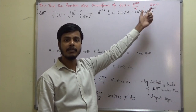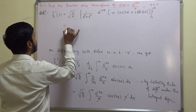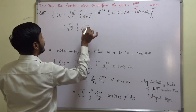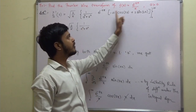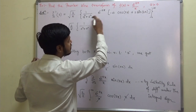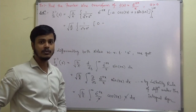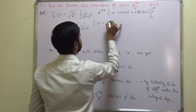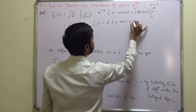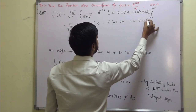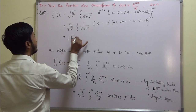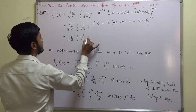Applying the upper limit minus lower limit: at the upper limit, e^(-infinity) = 0, so the upper limit contributes 0. At the lower limit, e^0 = 1, giving minus a·cos(0) plus s·sin(0), which is minus a. So f_s bar dash of s equals sqrt(2/pi) times 1/(s² + a²) times a, that is sqrt(2/pi) times a/(s² + a²).